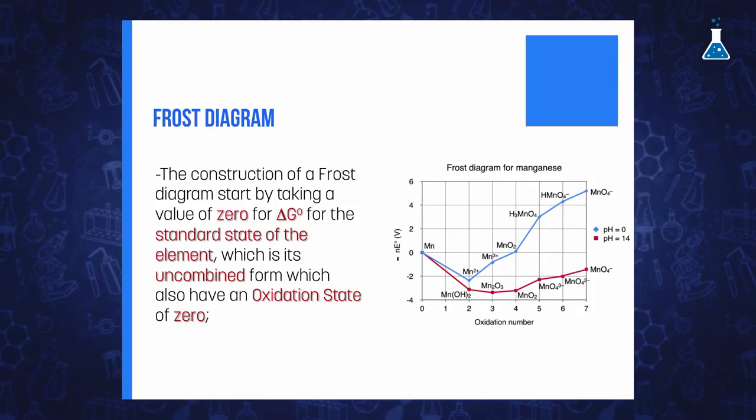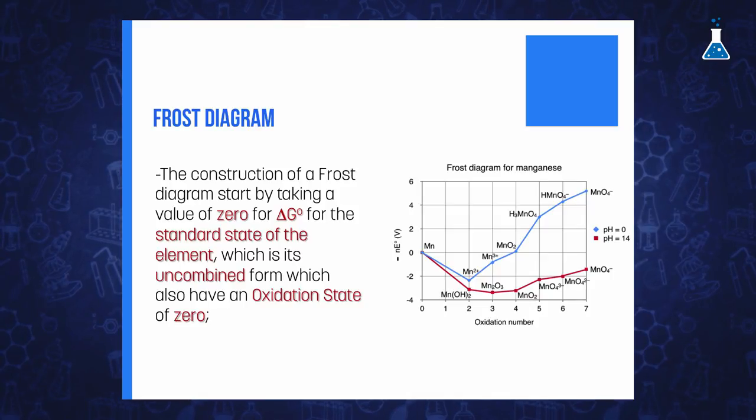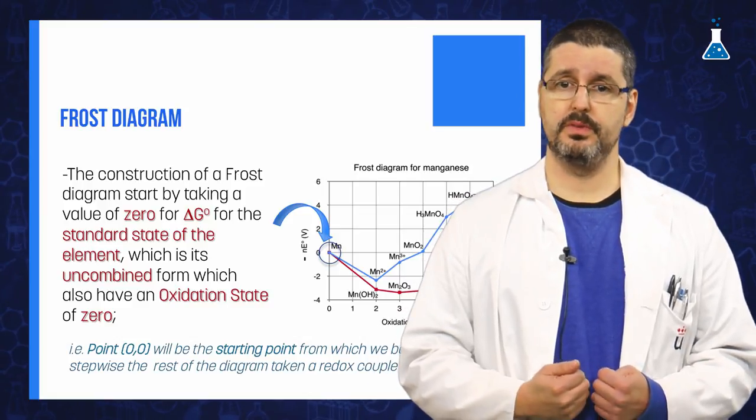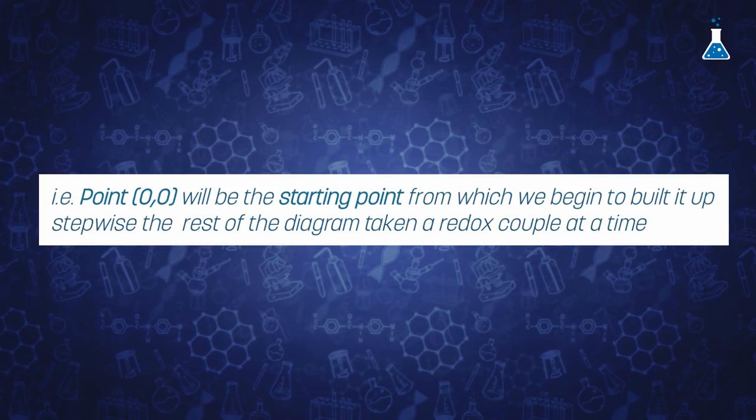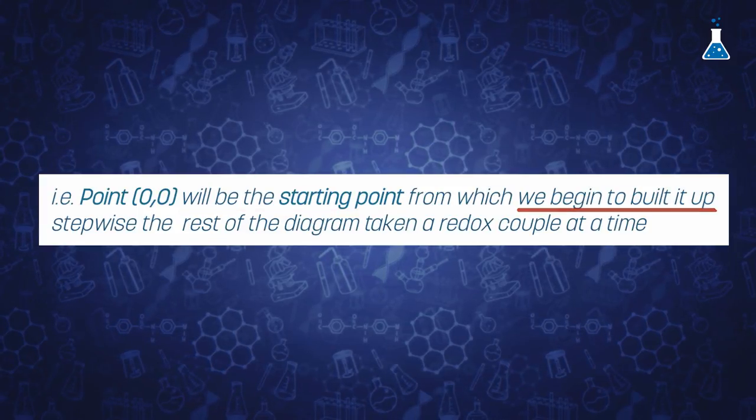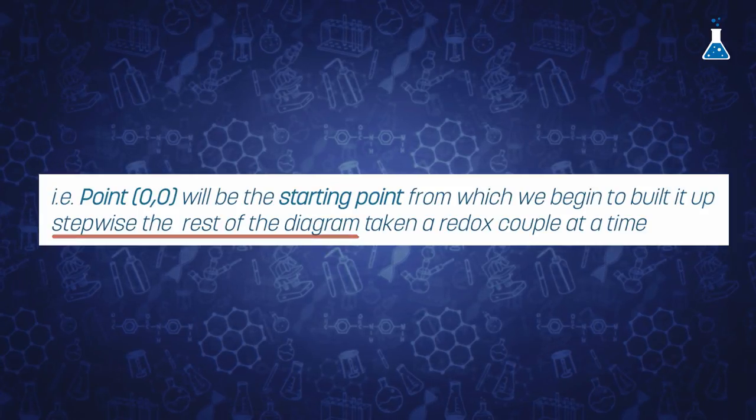We start to construct our Frost diagram by taking a value zero for the Gibbs free energy for the uncombined element, which also has an oxidation number of zero. Therefore, the (0,0) point will be our starting point, and we begin to build up stepwise the rest of the diagram from here, taking a redox couple at a time.